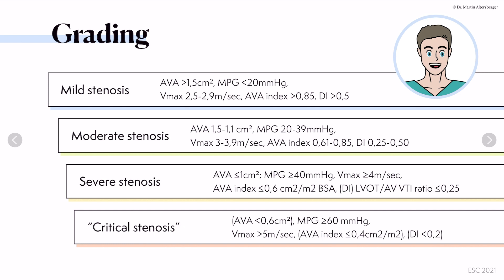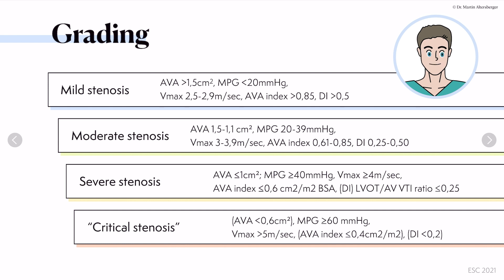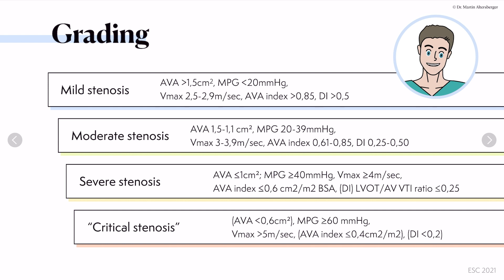There's another term: critical aortic stenosis. In a critical aortic stenosis, the aortic valve area is below 0.6 square centimeters. The mean pressure gradient — not the peak gradient, but the mean — is above 60 millimeters of mercury. The maximum velocity is above 5 meters per second. The indexed aortic valve area is below or equal to 0.4 square centimeters per square meter, and the dimensionless index is even below 0.2.